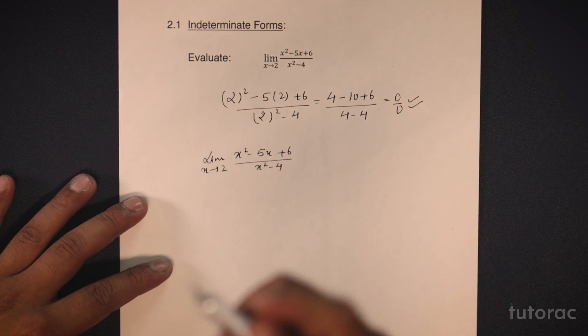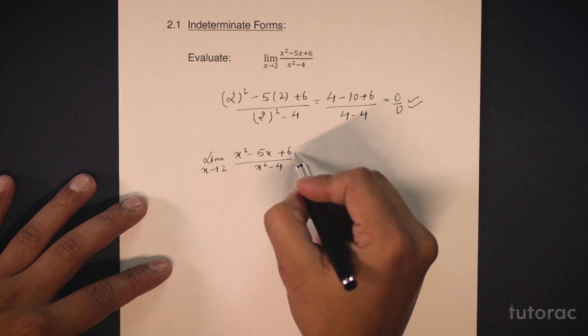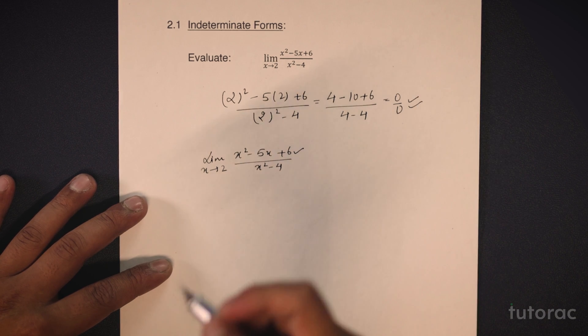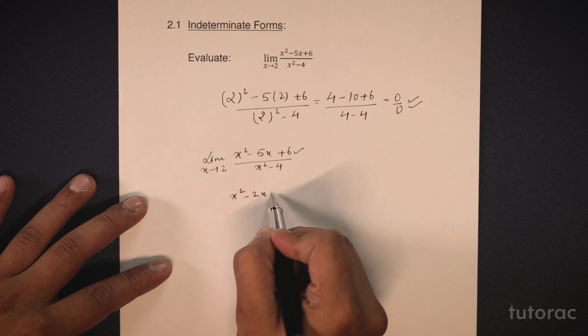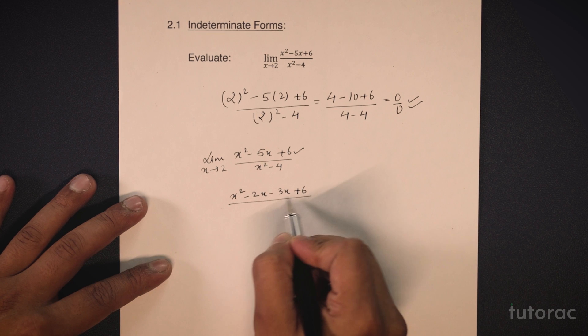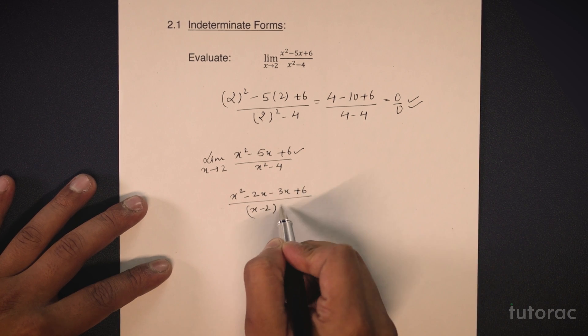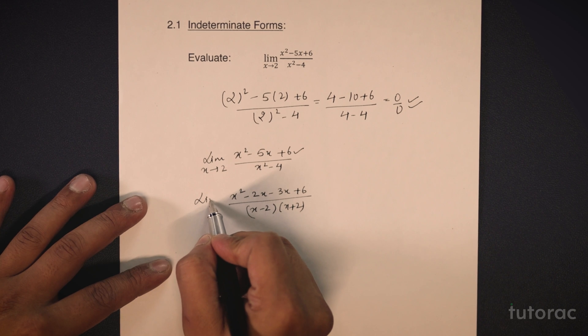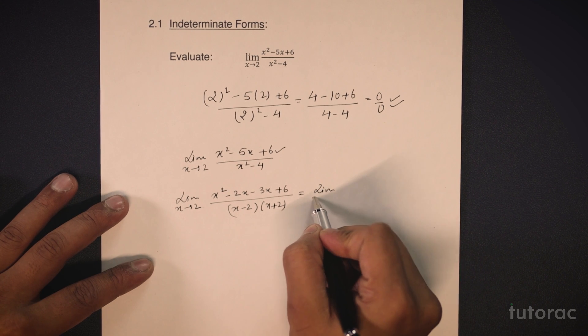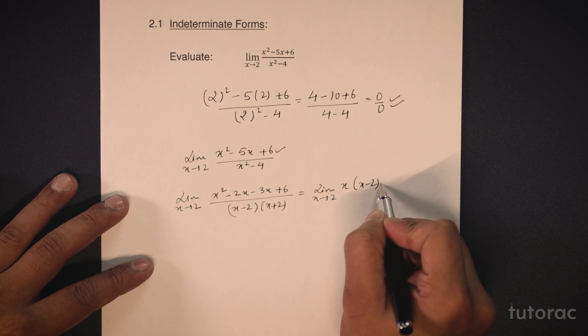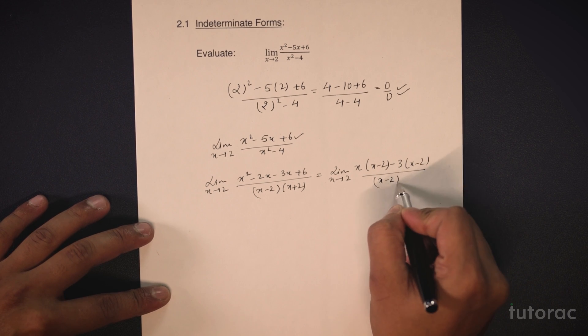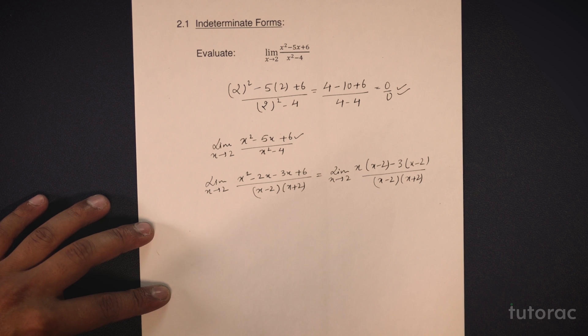I can easily factorize numerator and denominator and I will get x square minus 2x minus 3x plus 6 upon x minus 2 and x plus 2 and the limit is x tends to 2. I can write this as limit x tends to 2 x times x minus 2 minus 3 times x minus 2 whole upon x minus 2 multiplied by x plus 2.